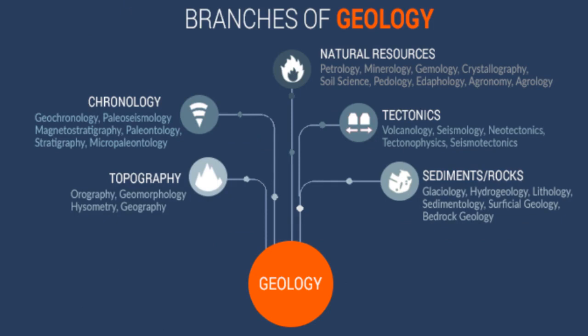We divide geology into five parts: chronology, topography, natural resources, tectonics, and rocks or sediments. Chronology tackles time and history. It tells us how old rocks and geological events are dated using signatures inherent in rocks and how geologic sediments and rocks are used to infer past earthquakes. It also deals with how organisms evolve and their interactions in their environment by studying fossil records often found in rocks and analyzing layers of rocks and strata to measure geologic time.